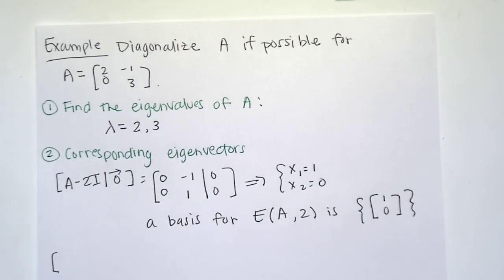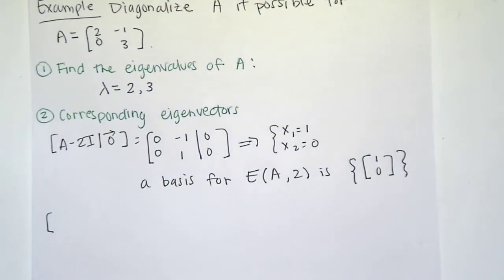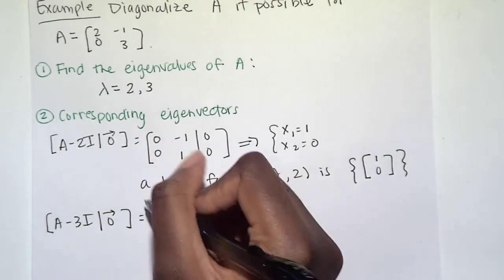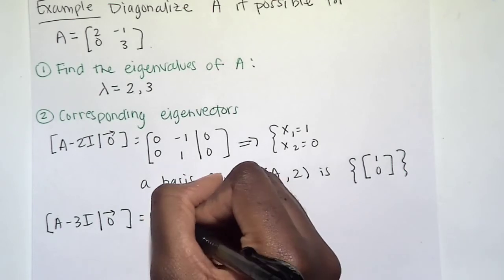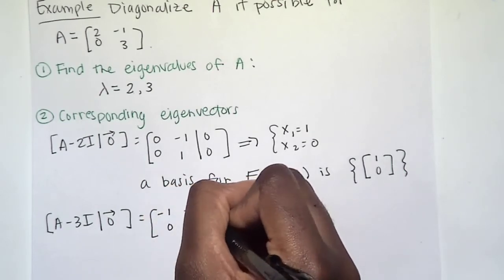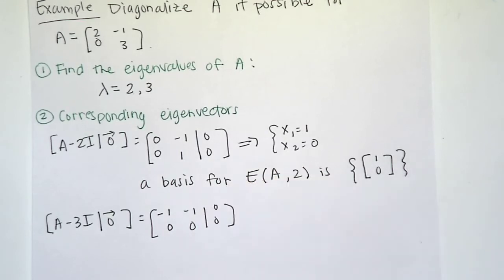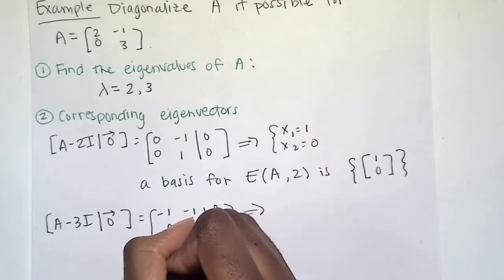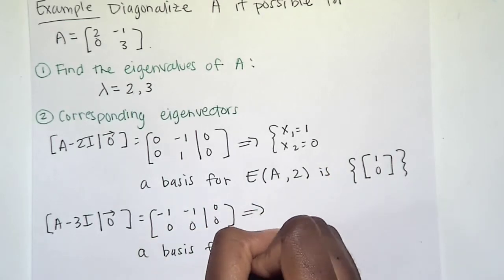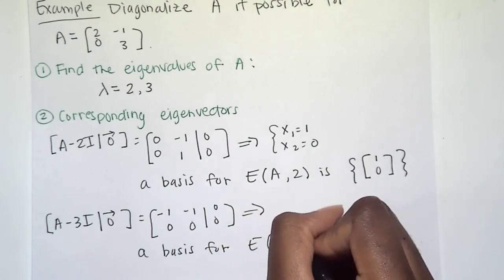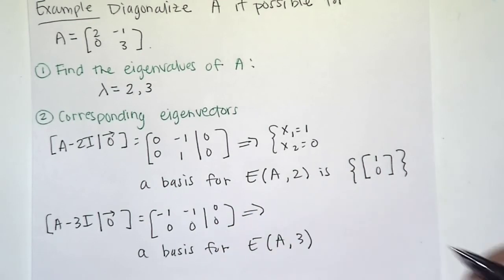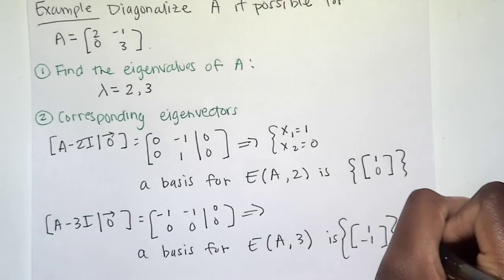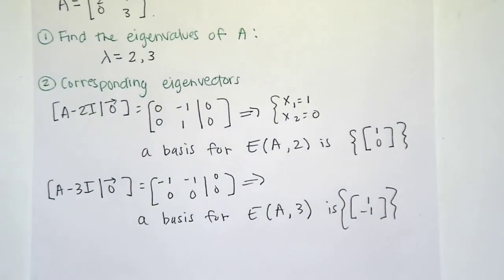Next we want to use our second eigenvalue, which is 3, so A minus 3I. Down the columns, negative 1, 0, negative 1, 0, and then we would solve, and then you would see that a basis for this eigenspace is [1, negative 1], or any scalar multiple of that.